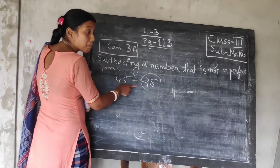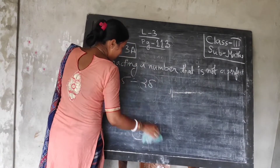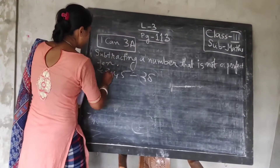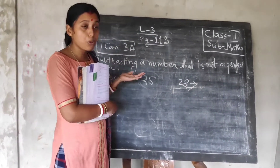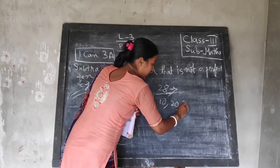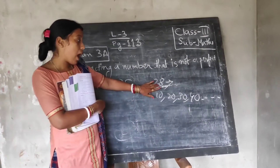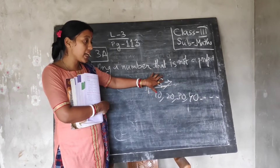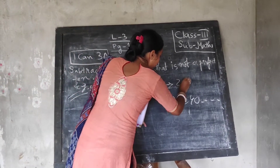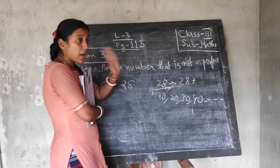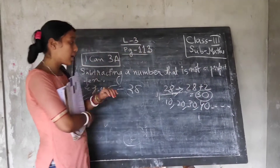The example is 45 minus 28 — you are subtracting 28 from 45. So, you have to make this number a perfect 10. Perfect 10 of 28 will be how much? You know what perfect 10s are: 10, 20, 30, 40 — all these are perfect 10s. So, what will be the perfect 10 of 28? After 20 — 28 is in your 20s. So, after 28, what is your perfect 10? 30. So, how to make it 30? 28 plus how much will be 30? 28, 29, 30 — 28 plus 2 is 30. So, 30 is your perfect 10 now.